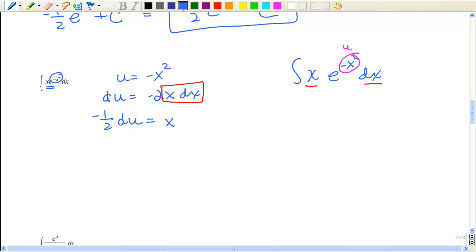So dividing by negative 2, just like in the previous examples, I can now make that substitution that I have e to the u, x dx is negative 1 half du. Just like the last example, I integrate that. But I don't get the same answer because my u is not the same. It was negative x².